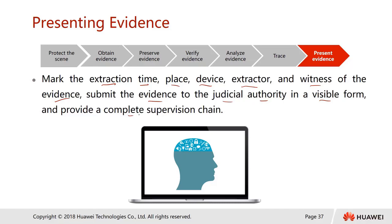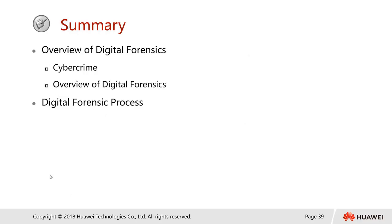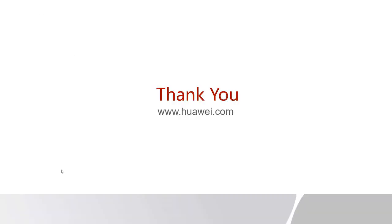Quiz: Which of the following is NOT a characteristic of digital evidence? A) Diverse, B) High-tech, C) Shapeless, D) Not easy to be damaged. The answer is D. Second question: Which of the following is NOT a principle of digital evidence verification? A) Legitimacy, B) Independence, C) Reliability, D) Supervision. The answer is C, Reliability. In summary, we covered the overview of digital forensics, cybercrime, and the digital forensic process.